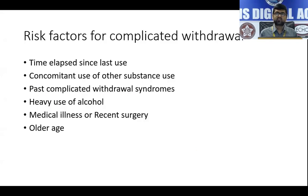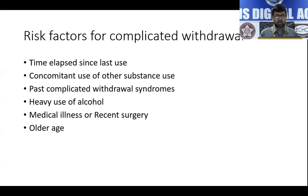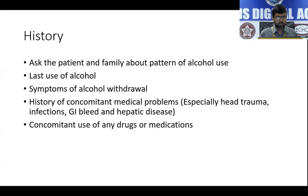There are certain risk factors for the development of complicated withdrawal. It's very important to ask about when the last use of alcohol was, or when a reduction in use was noted, whether there is a past history of complicated withdrawal syndrome, and the general amount of alcohol being used, since heavy use is very commonly associated with complicated withdrawal. People who are slightly older are at higher risk, as is the presence of a comorbid medical illness.